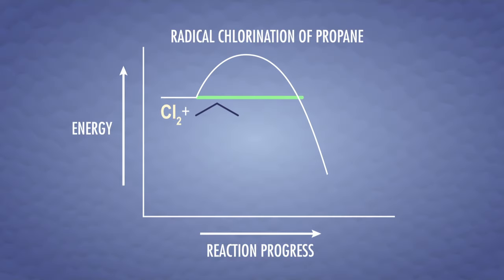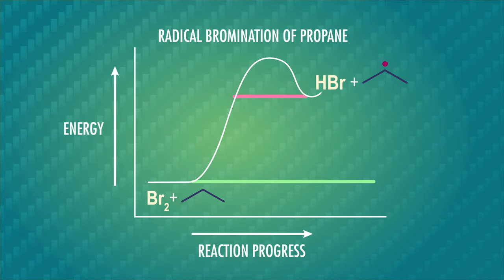The big difference between these two reactions is that the first propagation step in the radical chlorination of propane is exothermic, which means it loses heat to the surroundings, like a chemical hot pack. On the other hand, the first propagation step in the radical bromination of propane is endothermic, which means the reaction takes in energy from its surroundings, like a chemical cold pack.